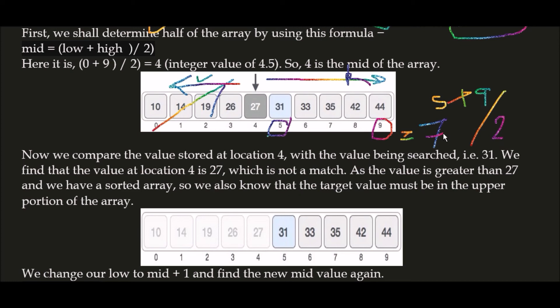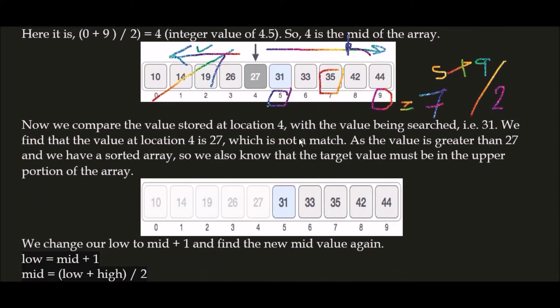What is the value of location 7? This is 35. Now we compare 35 with our target value. 35 is greater than 31.